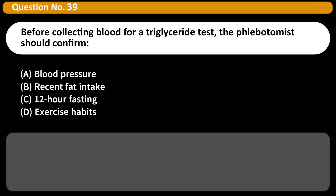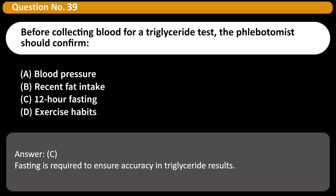Before collecting blood for a triglyceride test, the phlebotomist should confirm: A. Blood pressure. B. Recent fat intake. C. 12-hour fasting. D. Exercise habits. Answer: C. Fasting is required to ensure accuracy in triglyceride results.